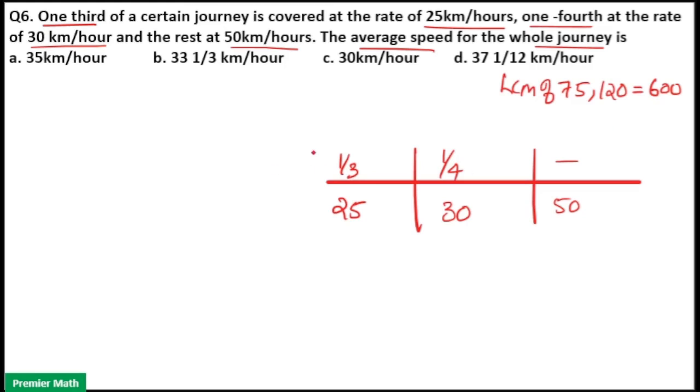I will take total distance as 600 km here. That means here distance one-third of 600 is equal to 200 km and one-fourth of 600 is equal to 150 km and here the remaining is 600 minus 200 plus 150, that is 350, that is equal to 250 km.